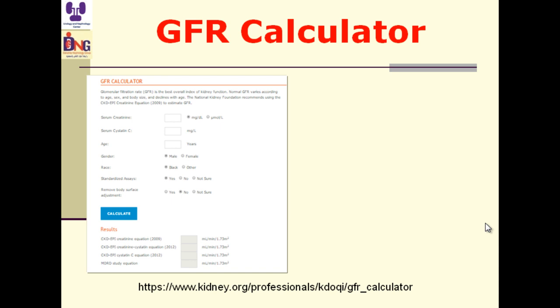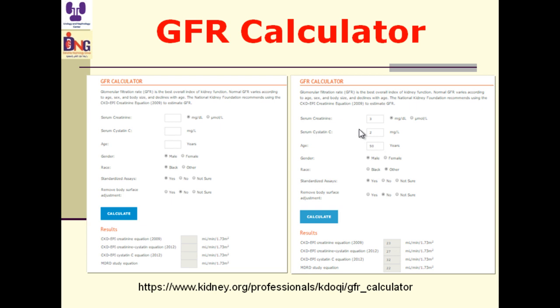To define chronic kidney disease, we look at values of estimated GFR or calculated GFR by calculators as guidelines state, or we look at urine. Renal dysfunction is either the presence of low GFR or abnormal urinary findings. Here is an example of a GFR calculator, downloadable from a link. You just write on Google 'GFR calculator' and fill in the spaces: serum creatinine, serum cystatin C, age, and select male or female. For example, if you put creatinine and cystatin C values for a 50-year-old male, non-black patient, the GFR will be calculated.